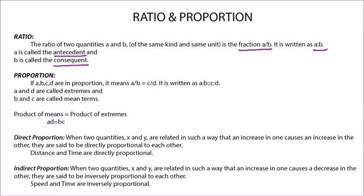Proportion: If A, B, C, D are in proportion, it means A by B equals C by D. And it is denoted as A is to B is in proportion to C is to D.